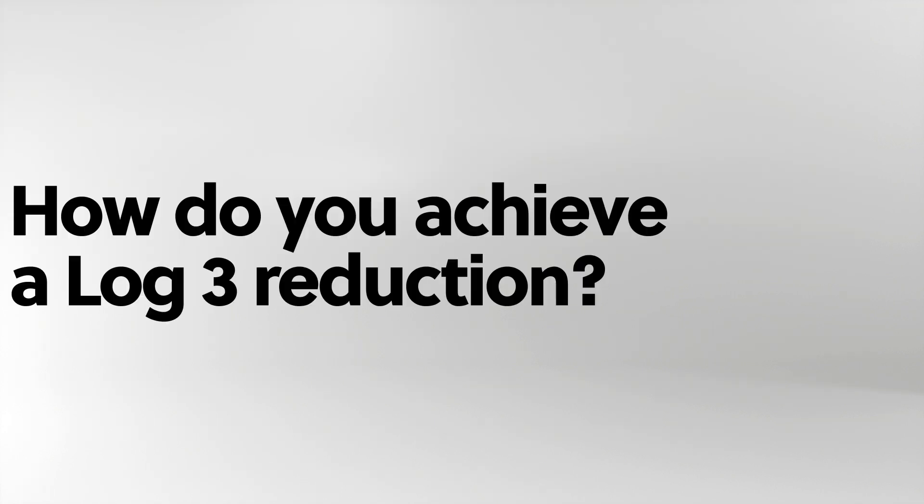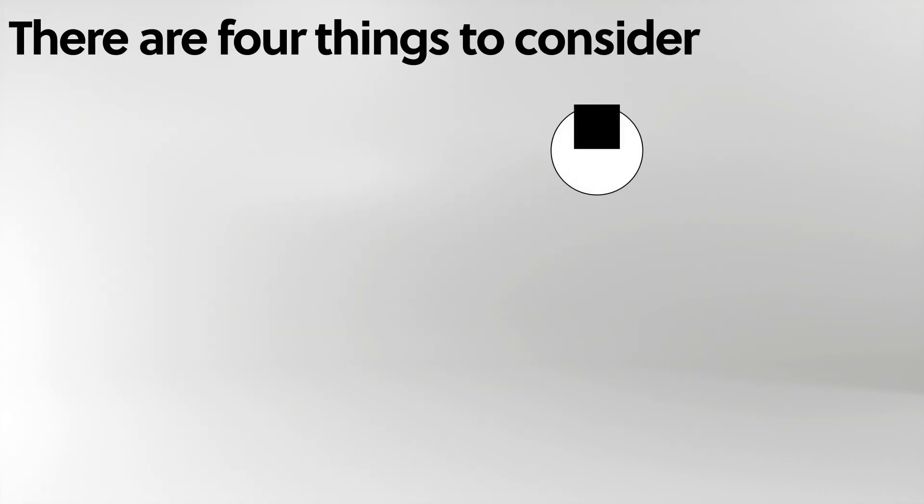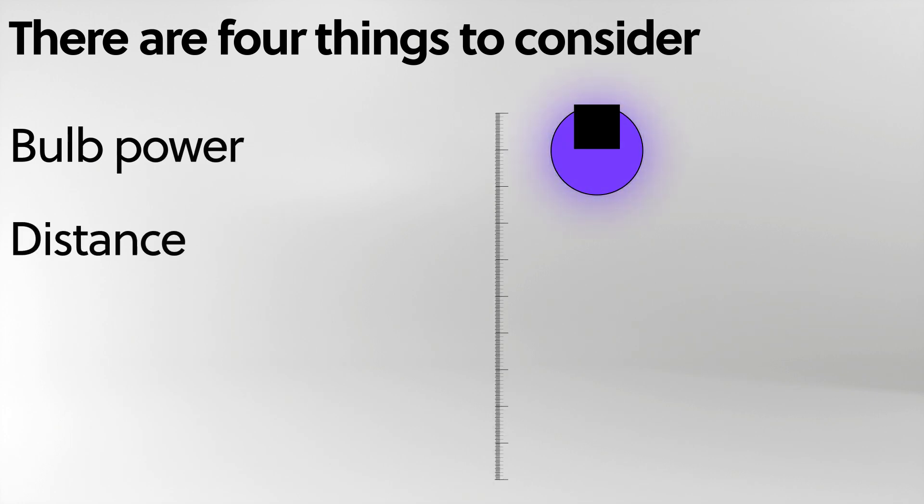How do you achieve a log 3 reduction? There are four things you must consider: the bulb power, the distance between the object and the bulb, duration of exposure, and shadowing.